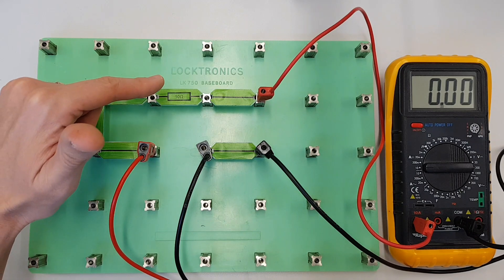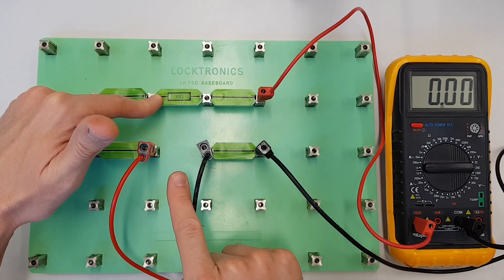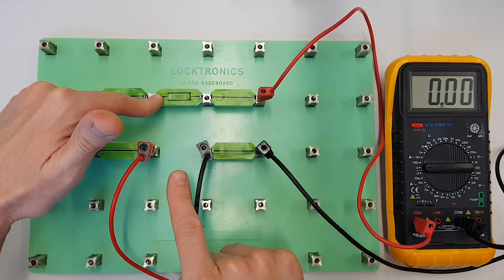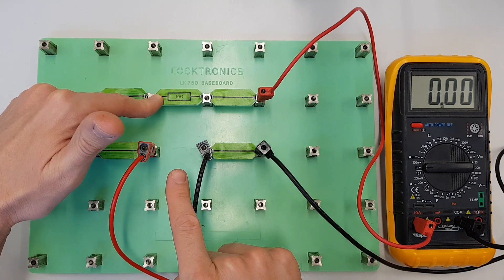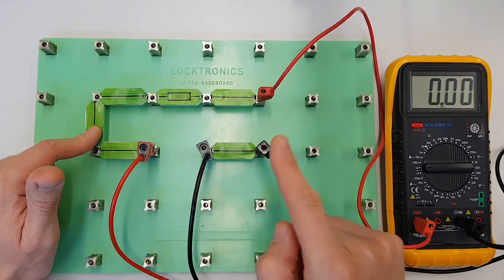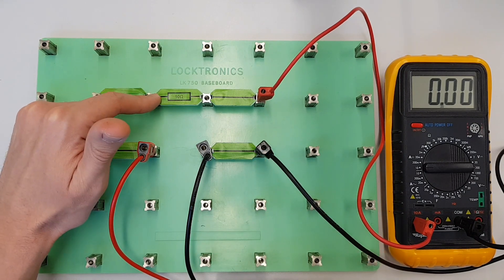When we kept the resistance the same but we increased the voltage input we could see that the current was increasing. So just to summarize, if you increase voltage you increase current. If you increase resistance you decrease current.